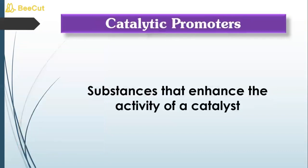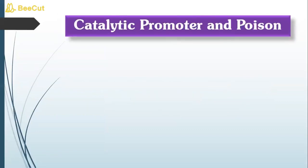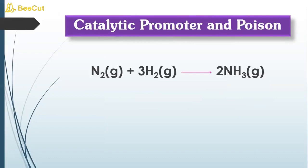Let us learn about catalytic promoters and catalytic poisons. A catalytic promoter is a substance which increases the activity of a catalyst, whereas a catalytic poison is a substance that decreases the activity of a catalyst. Let us analyze how these things work through examples.